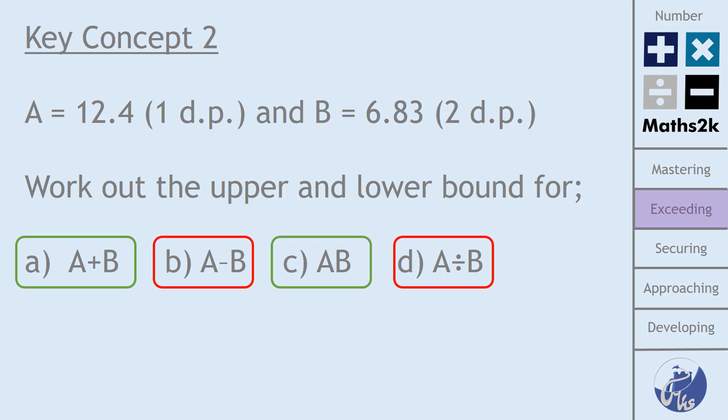So if you wanted the upper bound for A add B, you would choose the upper bound for A and the upper bound for B, because you'd want the two biggest values when you add together. And whilst that's going to be true for adding and multiplying, it doesn't hold true for subtracting and division. And so I'm going to go through an example to illustrate that next.